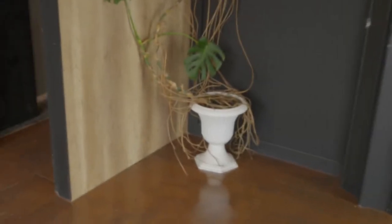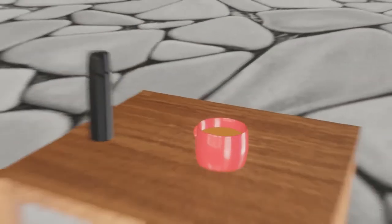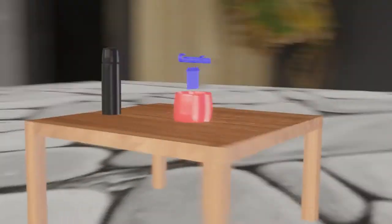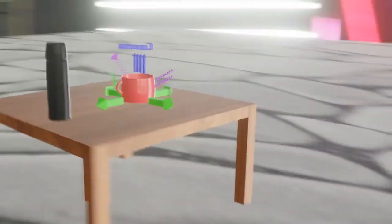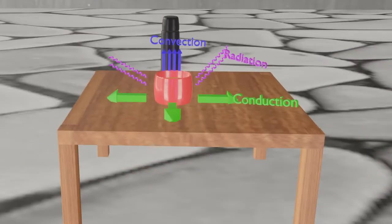For simple understanding, let's take a look at the coffee on the table. Heat is lost in the contact with the table, it is conduction. Heat is traveling in air, it is due to convection, and similarly due to radiation.